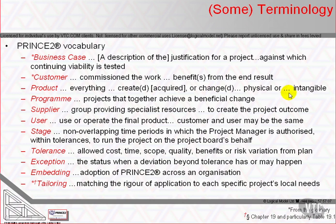Products are everything created, acquired, or amended — whether physical or not — by the project. So a culture change is a product. Program: from corporate and program management, a program is from which projects together achieve a beneficial change. The glossary says: a temporary flexible organizational structure created to coordinate, direct, and oversee the implementation of a set of related projects and activities in order to deliver outcomes and benefits related to the organization's strategic objectives. A program is likely to have a life that spans several years.